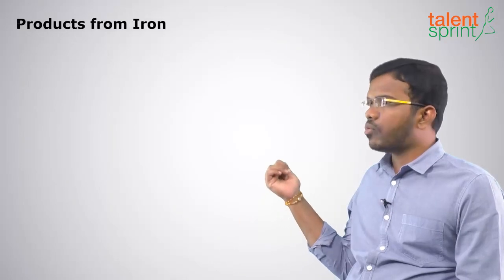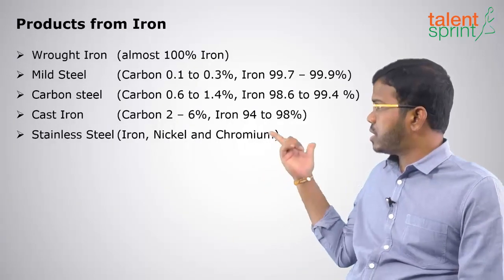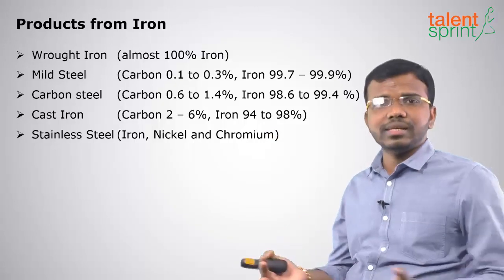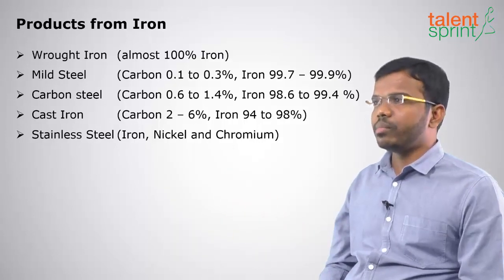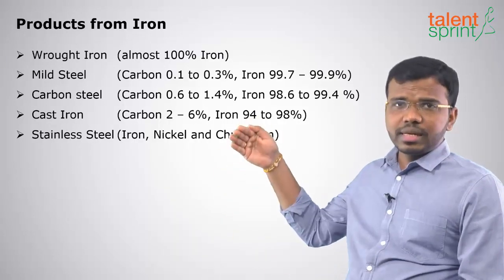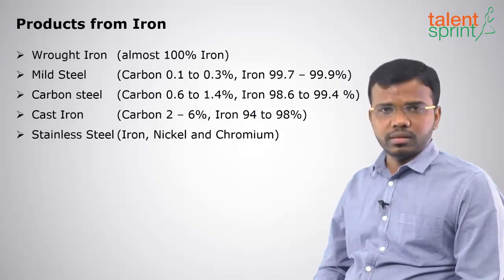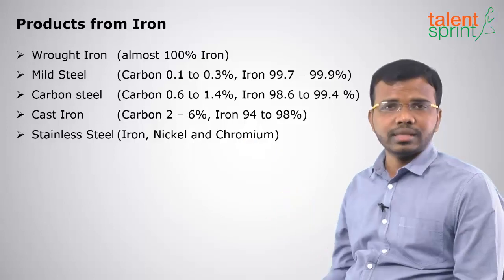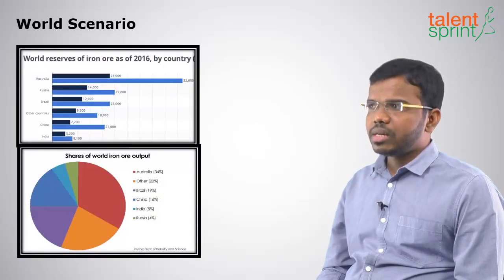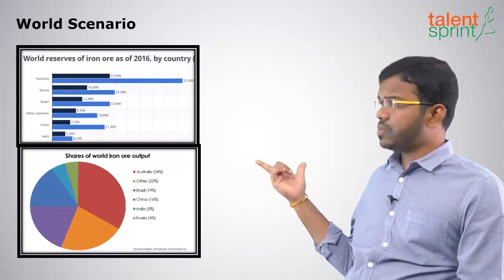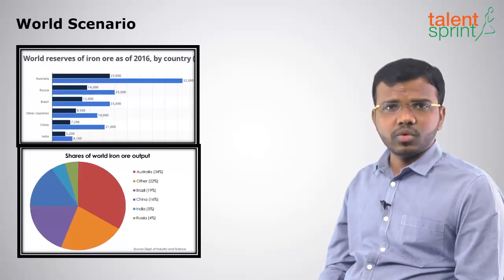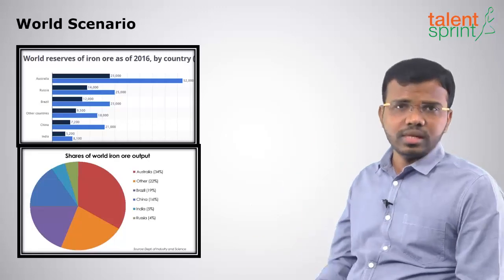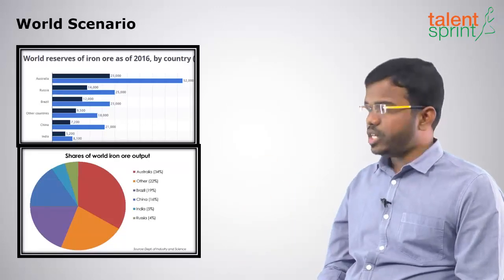Coming to products from iron: wrought iron contains 100 percent iron; stainless steel is an alloy of iron, nickel, chromium, etc.; mild steel has lesser carbon and high iron; carbon steel; and cast iron. Regarding the world scenario, Australia has the highest reserves and produces the highest in the world, followed by other nations.